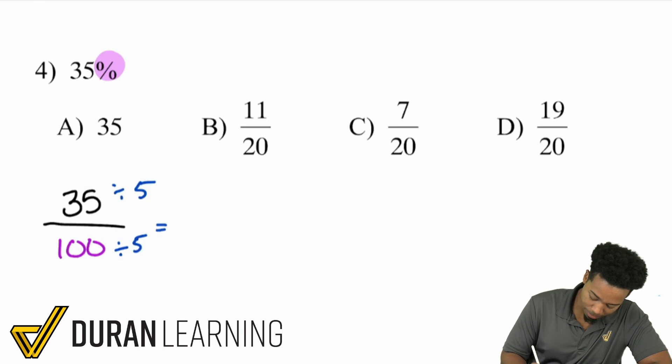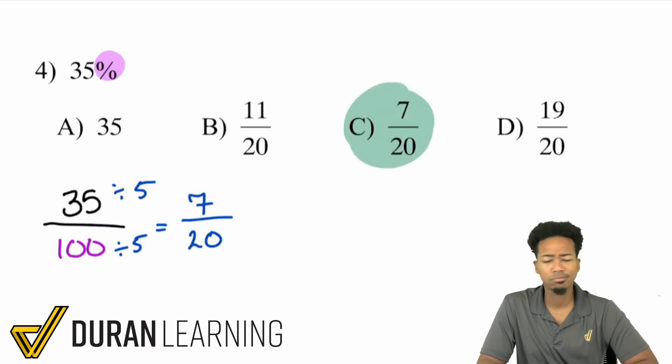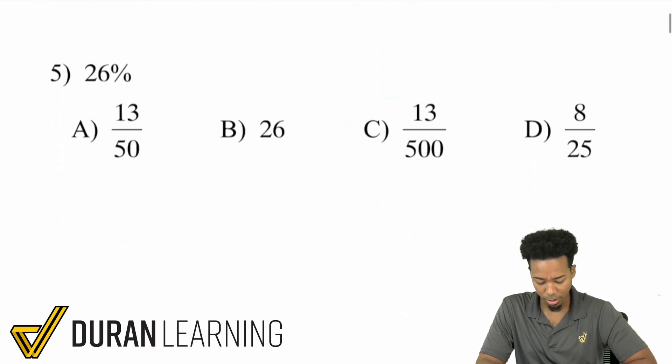Divide by 5 in the top and the bottom. 35 divided by 5 is 7. 100 divided by 5 is 20. And there's our answer right there. 7 over 20. And we're all good. Seriously, my math party people, it can be that straightforward, that much fun.